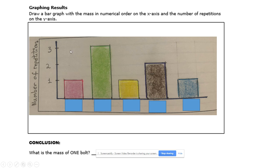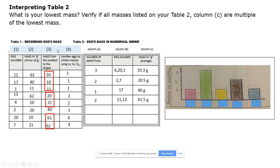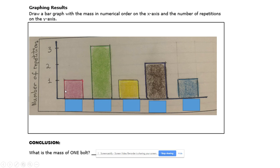These numbers will be recorded on your x-axis of your bar graph. You are going to be drawing a bar graph with the y-axis labeled number of repetitions. And you are going to count from 1, 2, and 3. And you are going to write in these blue boxes your mass numbers. So, 10.3, 20.5, and so on.